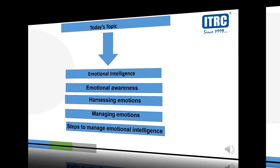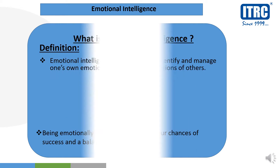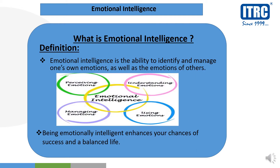What is emotional intelligence? Emotional intelligence is the ability to identify and manage one's own emotions. The more emotionally intelligent you are, the more successful you will be in your life. Emotional intelligence includes perceiving emotions, managing emotions, understanding your emotions, and then using these emotions — as shown in the diagram, these 4 things are very important for emotional intelligence.